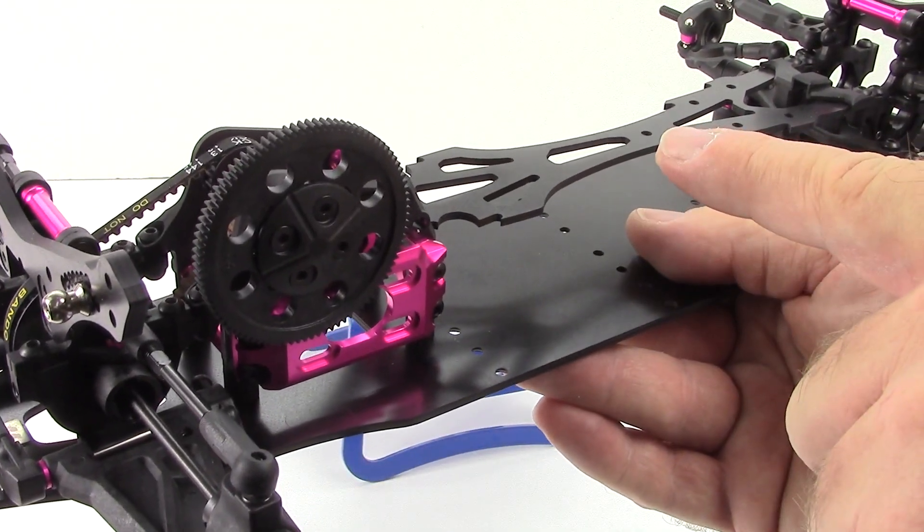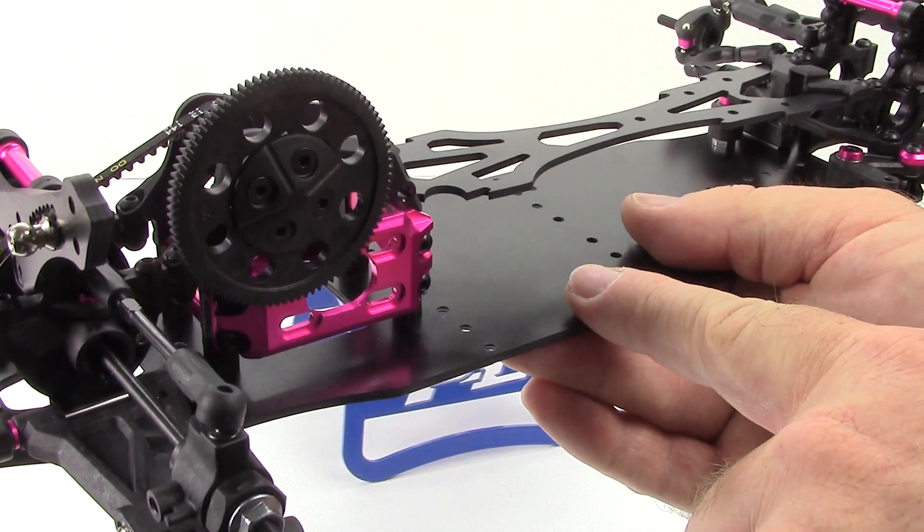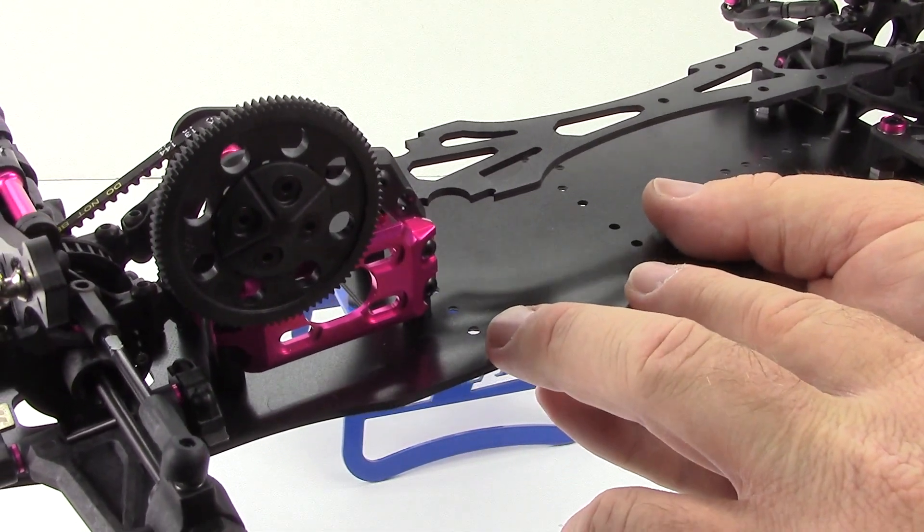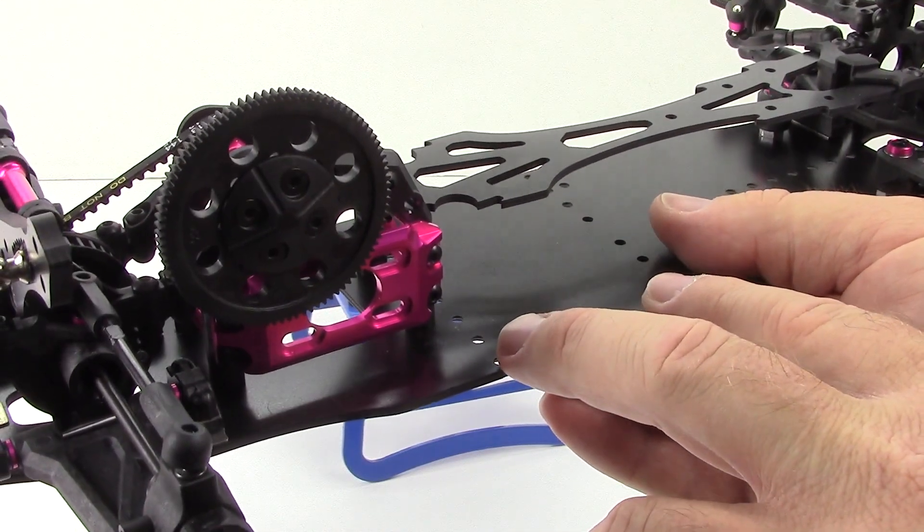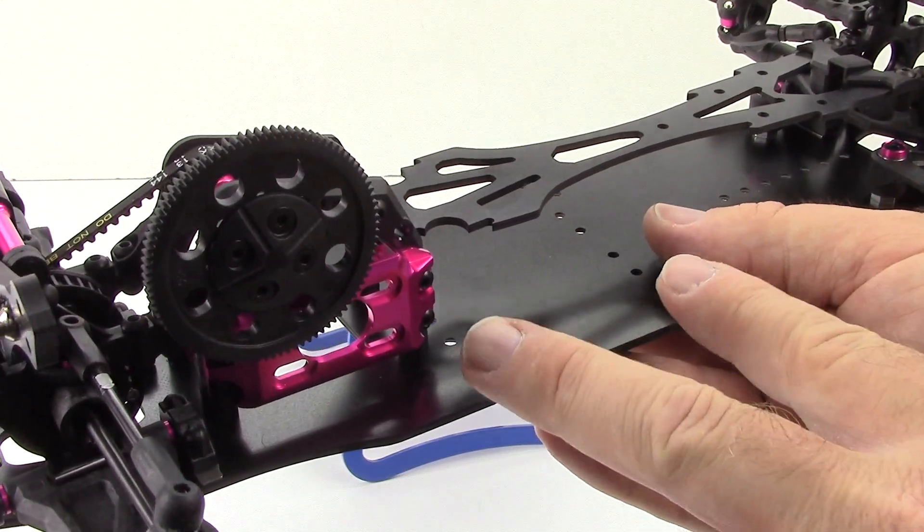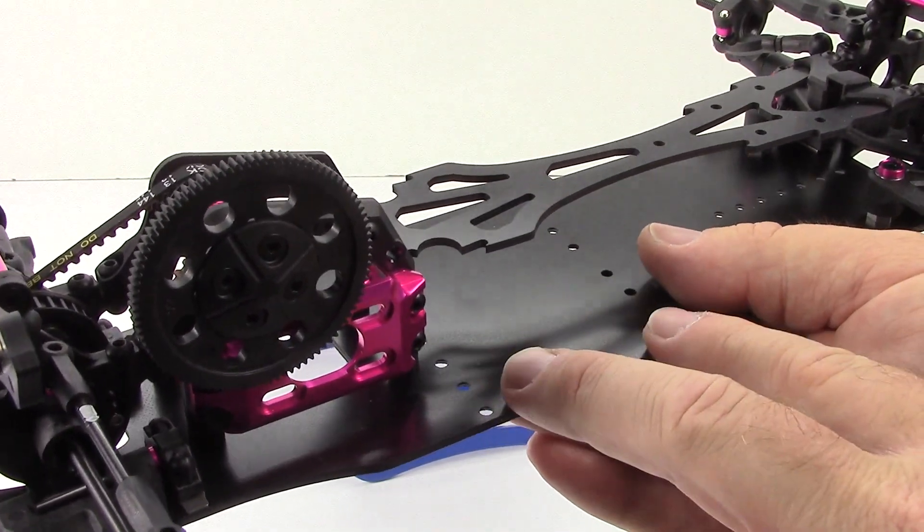You do get a fiberglass reinforced chassis here or FRP. This is an improvement over the D3 where the D3 had that plastic tub chassis style.